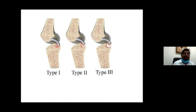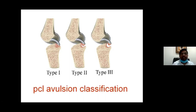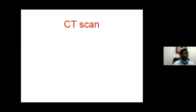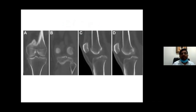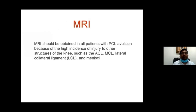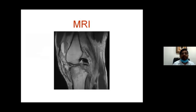The classification has Type 1 to Type 3 depending on the amount of displacement from the attachment, which is normally about 10 mm from the tibial articular surface. 3D reconstruction helps in planning the procedure, as many comminuted fracture fragments cannot be treated with screws alone. MRI is important to identify associated injuries and assess PCL attachments.